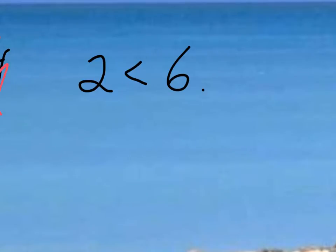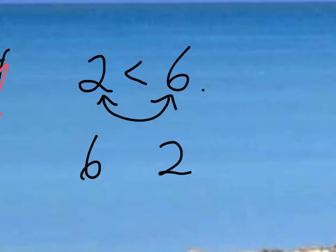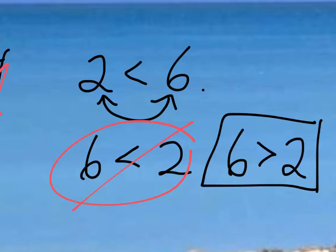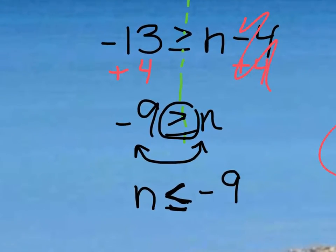Just to explain why that's the case, let me give you a quick example. Let's say we have the inequality that 2 is less than 6 — obviously that makes sense, 2 is a smaller number than 6. Now if we were to switch the places of these two numbers — 6 here, 2 here — and if we kept the symbol the same, it would say 6 is less than 2, which is wrong. So if you're going to reverse the 6 and the 2, you should also reverse the direction of the inequality, which keeps the statement true: 2 is less than 6, and 6 is greater than 2.